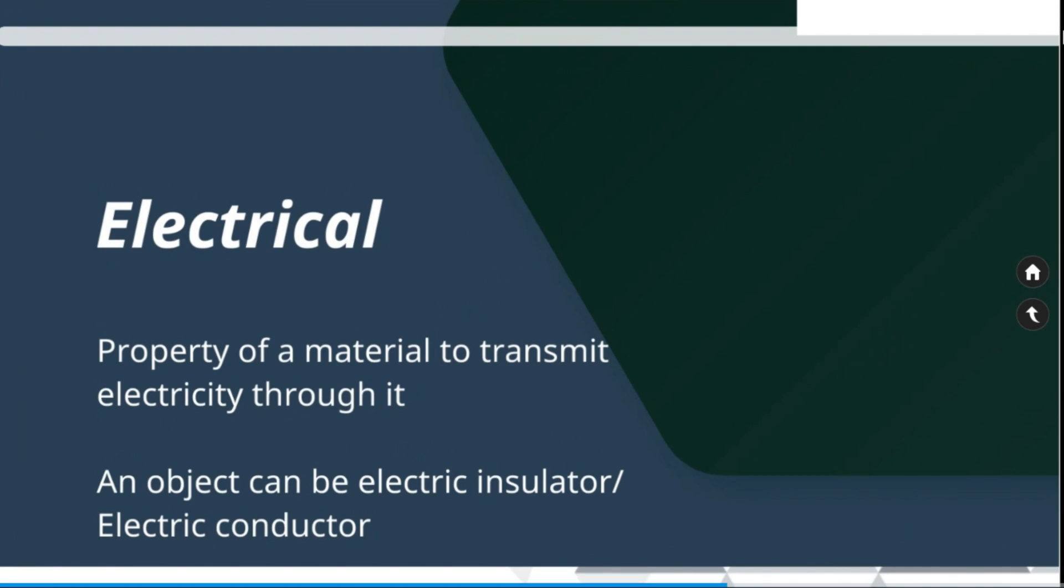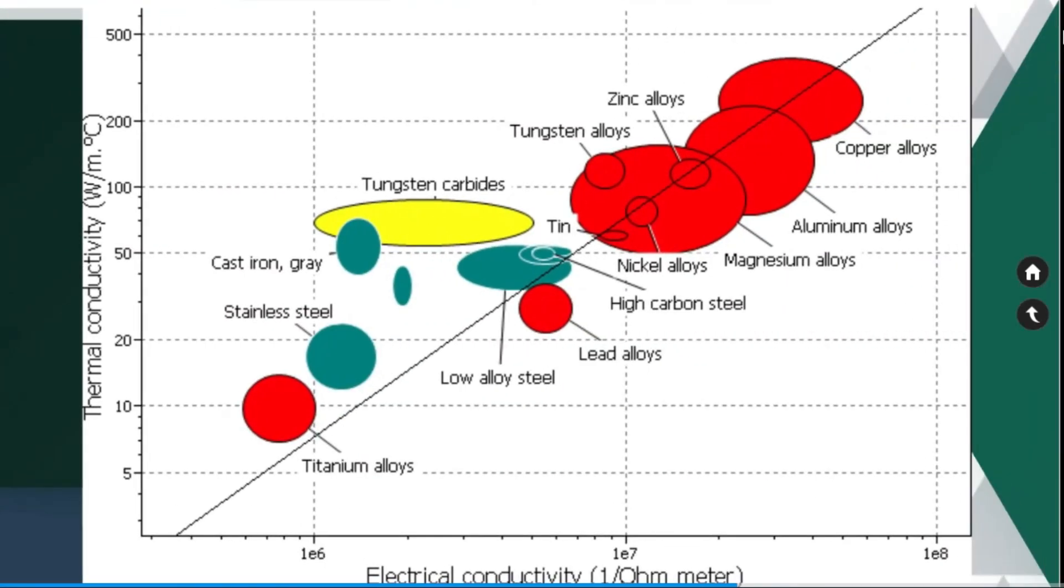The property of a material to transmit electricity through it is called electrical conductivity. An object can be electric insulator or electric conductor. This chart shows the electrical conductivity and thermal conductivity of multiple materials. Copper and aluminum alloys have higher electrical conductivity and thermal conductivity.